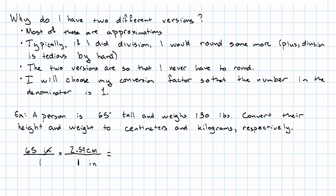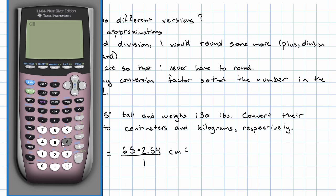So inches cancel out. I'll have 65 times 2.54 over 1 centimeter. Now, we could work out that arithmetic by hand if we wanted to, but let's use the calculator. 65 times 2.54 gives me 165.1 centimeters.